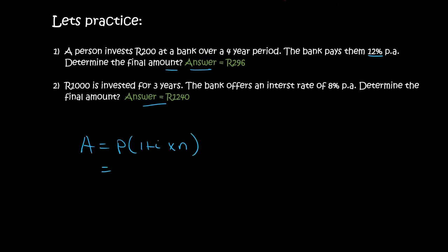I is always the percentage, where you can either type in 12% or you have to say 12 over 100. Then the number of years is 4. You type all of that in on the calculator and you get 296. That is the total amount that the person has.